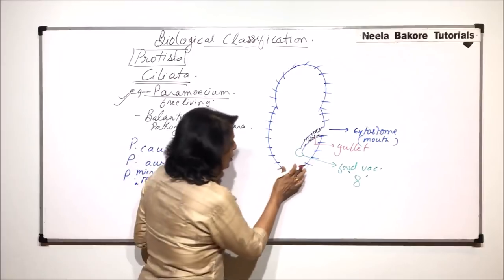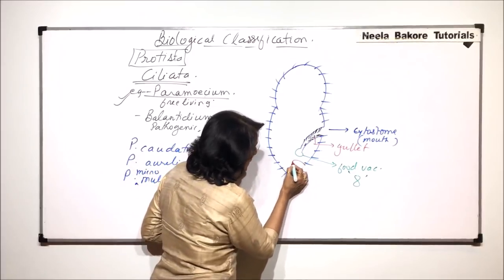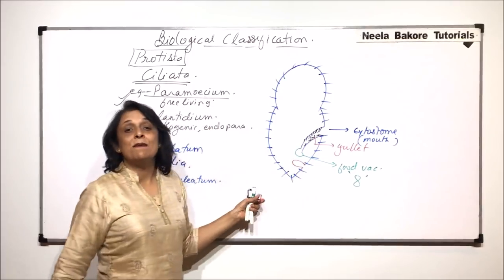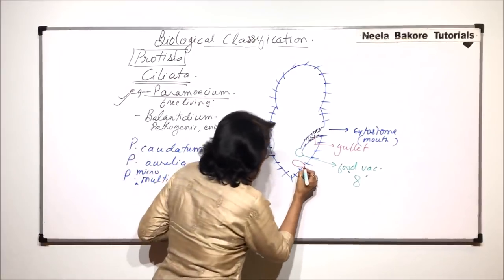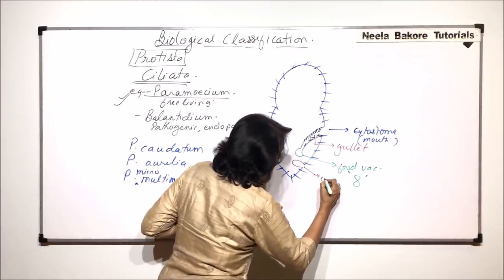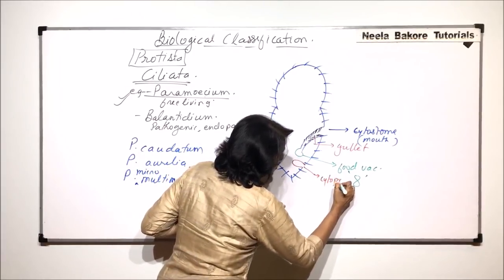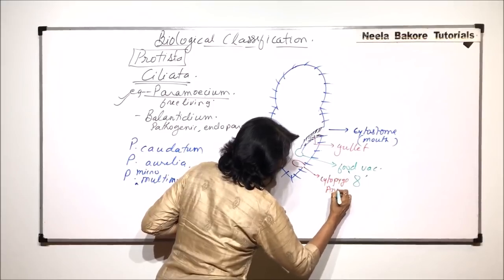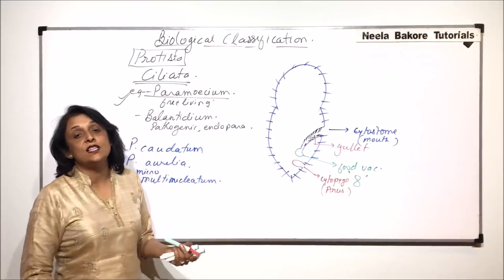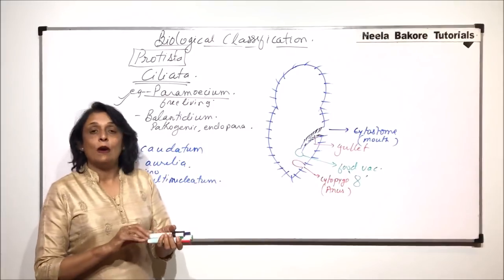Now there is one more opening here, which is resembling the anus. This structure is called cytopyge and it resembles the anus through where the undigested food would be thrown out.